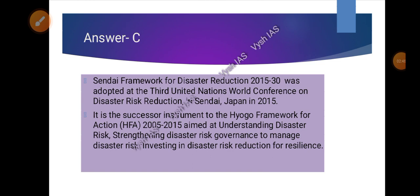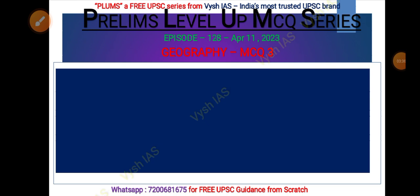The answer is the Sendai Framework, which is the successor instrument to the Hyogo Framework for Action. The Sendai Framework for Disaster Risk Reduction spans from 2015 to 2030. It was adopted at the Third United Nations World Conference on Disaster Reduction in Sendai, Japan in 2015. It is aimed at understanding disaster risk, strengthening disaster risk governance, and investing in disaster risk reduction for resilience.